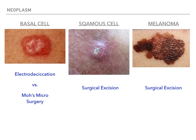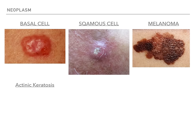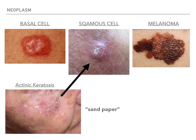Actinic keratosis looks sort of similar to squamous cell carcinoma but not as bad — more of a regular scabby lesion on the face, described as a sandpaper lesion. If you don't treat it, it can progress to squamous cell carcinoma. So it's considered a pre-malignant or pre-cancerous lesion, which is why it's really high yield on boards.